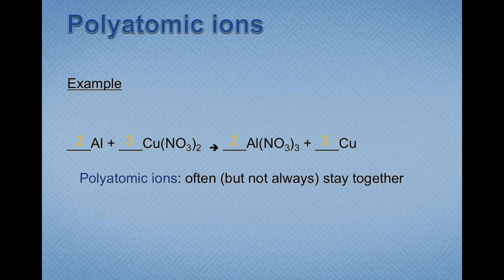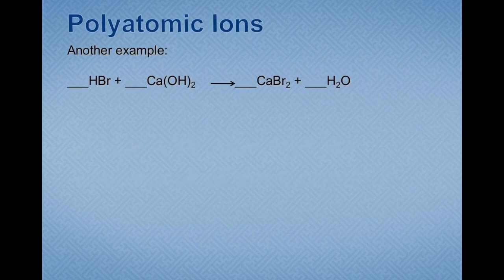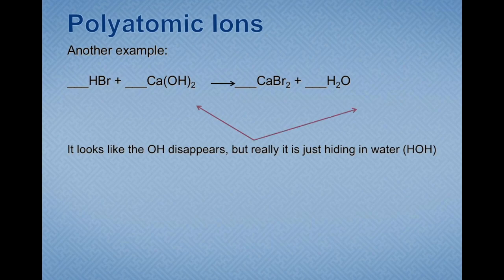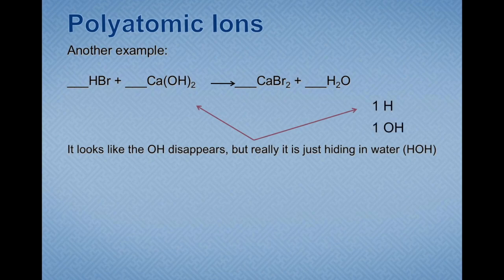Now we'll look at another example of a polyatomic ion: the hydroxide ion, or OH. If we look at this equation, it looks like the OH is disappearing, but in reality you can think of it as hiding in water. Water is oxygen with two hydrogen atoms attached, so you can think of it as an H and an OH — essentially an H attached to a hydroxide ion. So we can write down that water is composed of one H and one OH.